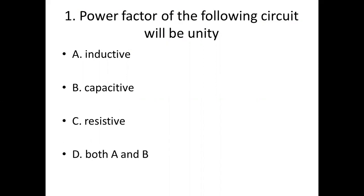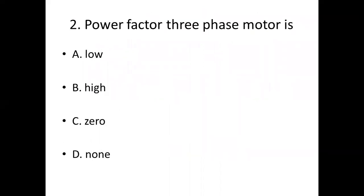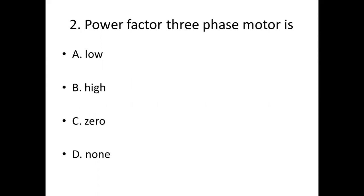Resistive. Second bit. Power factor of a 3-phase motor is. Option A: Low. Option B: High. Option C: Zero. Option D: None. Answer: Option B. High.